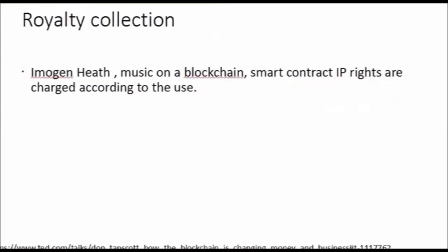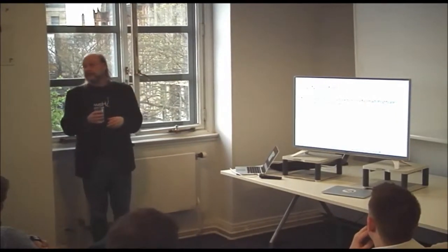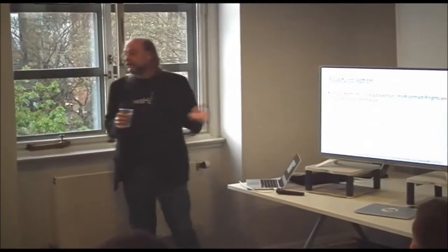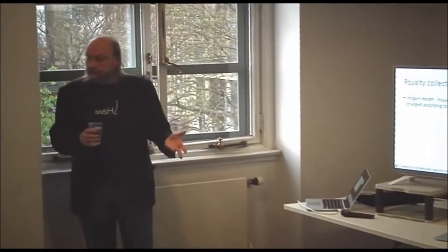A lady called Imogen Heath put her music on blockchain. That allows her to set up a smart contract for intellectual property rights. What that means is that if you want to listen to the music, you pay a fraction of a penny. If you want to use her music in a Hollywood blockbuster, the contract says you'll pay a lot more. If you want to use it on a Christmas card, it may say you can't do that. The point is that this is tracking her intellectual property.